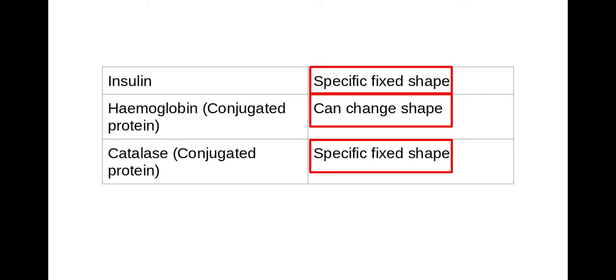There are three main globular proteins here we need to be aware of: insulin, haemoglobin, and catalase. Two of those are conjugated proteins because they contain a prosthetic group. Anything in a red box, again, is taken directly from the mark scheme.